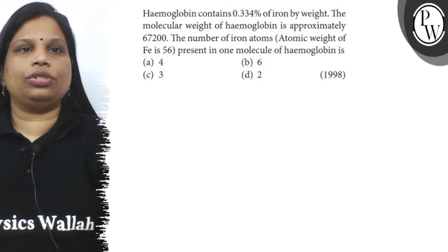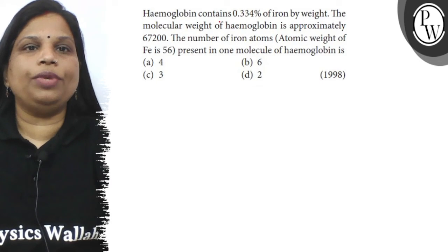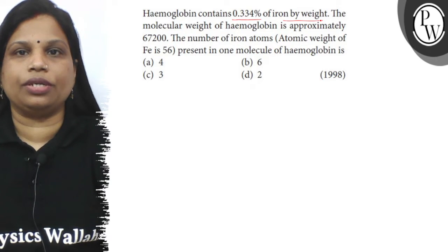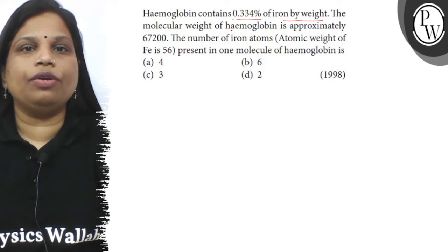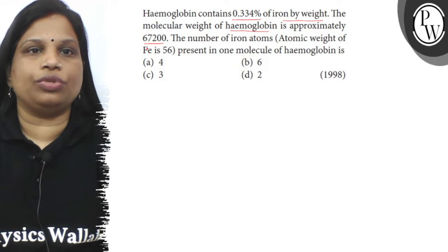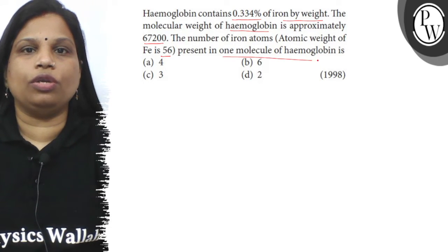Hello, let's read the question. The question says hemoglobin contains 0.334 percent of iron by weight. The molecular weight of hemoglobin is approximately 67200. The number of iron atoms, atomic weight of iron is 56, present in one molecule of hemoglobin.